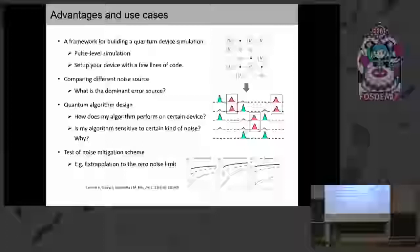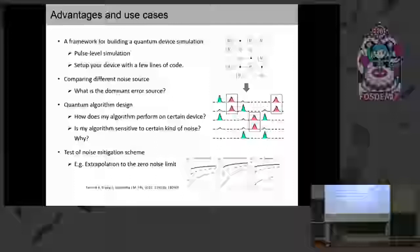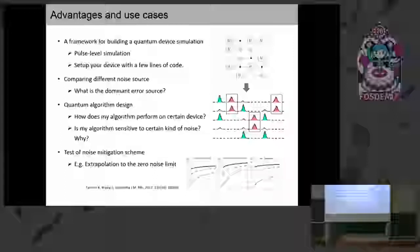There are a lot of potential use cases for this. Because we're running a simulation, you can turn noise on and off, meaning you can compare the influence of different kinds of noise. In this way, you can determine — or at least study and gain intuition about — what is actually the dominant noise in your system. If you are designing a quantum algorithm, you can also give your quantum algorithm as input to our system and see how the algorithm performs on a certain kind of device, or whether your algorithm is sensitive to a certain kind of noise.